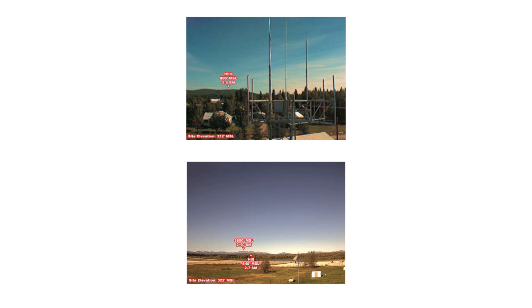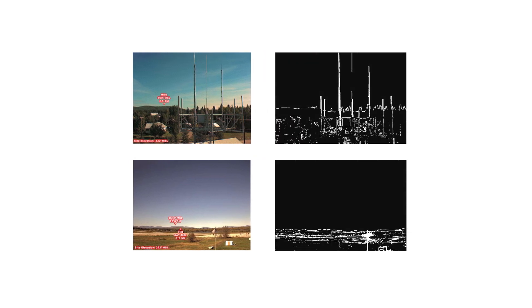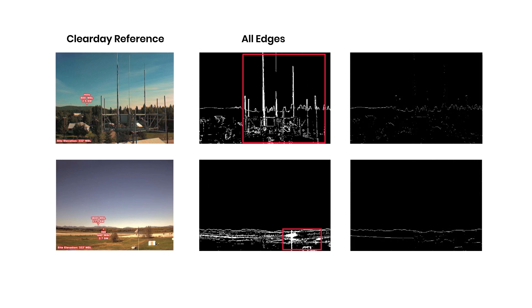One problem, though, was that sometimes an antenna or other objects very close to the camera would dominate the scene. Since those objects are always visible in any weather, the algorithm would think conditions are clear even if the edges beyond the antenna were fading away. To overcome this, the development team used a scanning technique to find the horizon and the second darkest edge along each pixel column in the image. This technique, known as the horizon plus method, improves results by guaranteeing that the selected edges are well distributed across the scene and not clustered or dominated by an antenna or tree in the foreground.